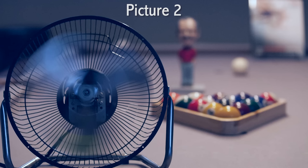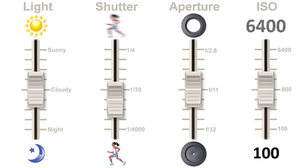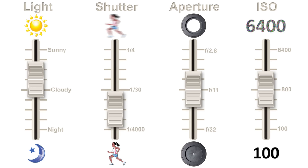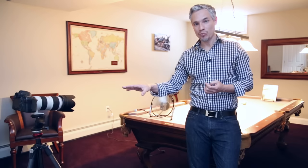A stop in photography is a doubling or a halving of the light. If you double the amount of light in the room, you've added one stop of light. If you cut the shutter speed in half — going from 1/250th of a second to 1/500th of a second — you've increased the shutter speed by one stop. Now I'm going to move the camera into manual mode, where I can lock down everything and prevent the camera from making any automatic decisions. It gives me complete control.